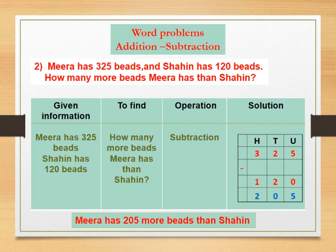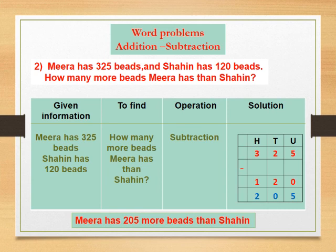Now we see the next example. Meera has 325 beads and Shahin has 120 beads. How many more beads does Meera have than Shahin? Meera जवळ 325 मणी आहेत आणि Shahin जवळ 120 मणी आहेत, तर Meera जवळ Shahin पेक्षा किती जास्त मणी आहेत? When we solve this, first we write given information, then to find, then operation, and then solution.